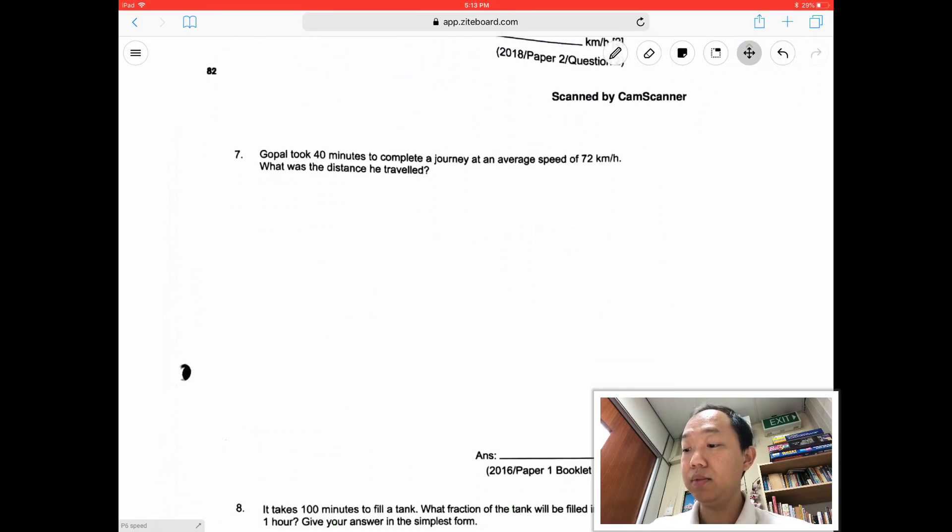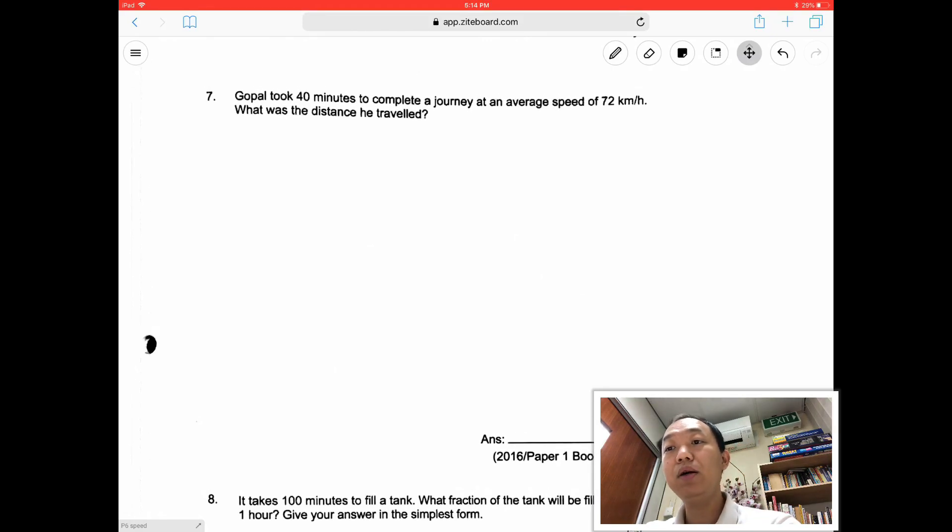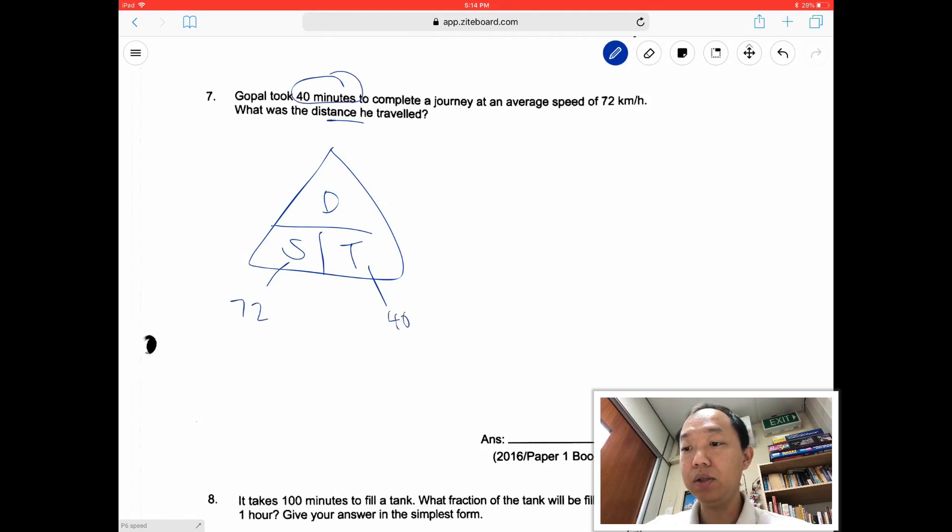I think we have one more. This is 2016. So Gopal took 40 minutes to complete the journey at an average speed of 72. What's the distance? Typical DST triangle. So I want to find the distance, we take speed times time. Speed is 72. Time is 40 minutes convert to hour. 40 out of 60 equals 2/3 hour. So to find the distance, we take 72 times 2/3. Now this is paper 1, so you cannot use a calculator. 72 times 2/3, this is 24 times 2, which is 48 kilometers. That's it.